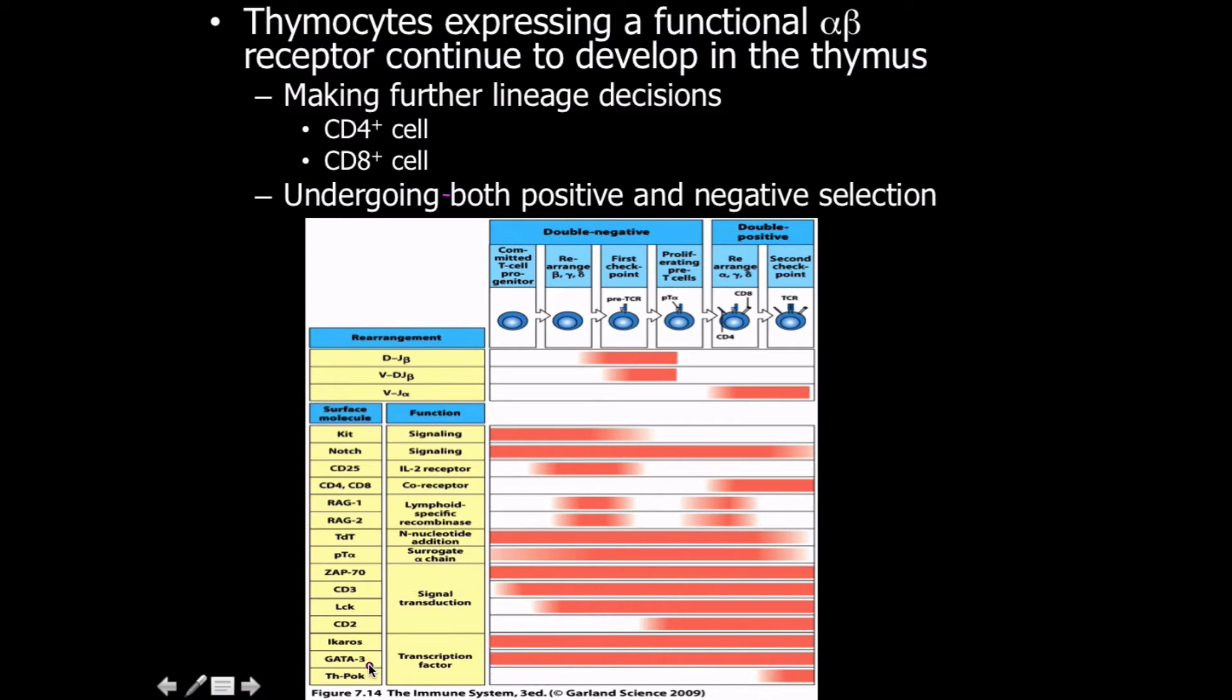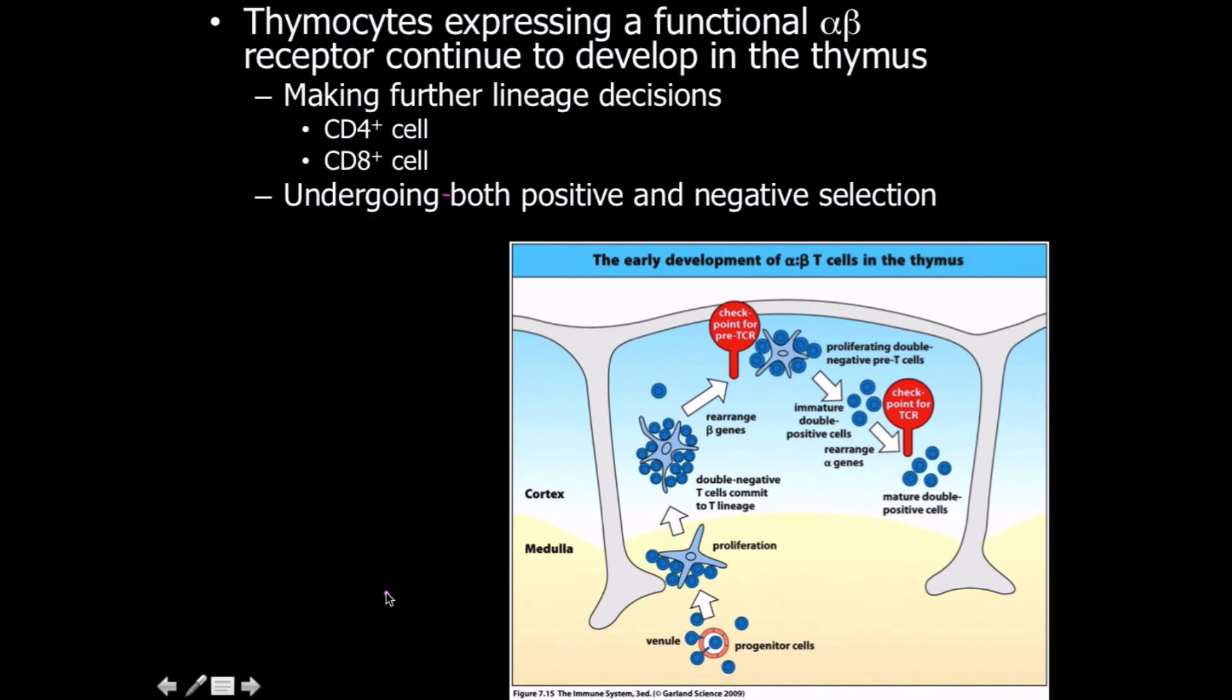For example, Icarus and GATA3 transcription factors are present throughout the entire process. The POC is only present when we have double positive. This is the source of my map. We have rearrangement taking place, signaling, RAG12, TDT, pre-cell surrogate alpha chain, ZAP, CD3, LCK, all these things that are going to come into play.